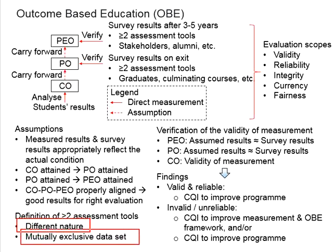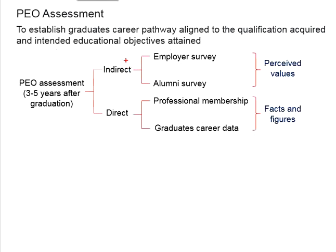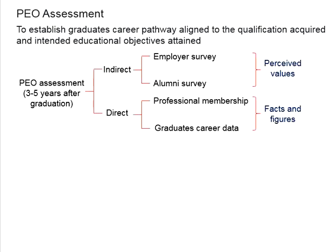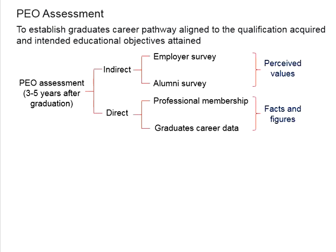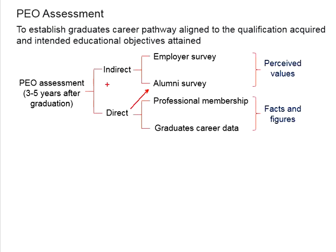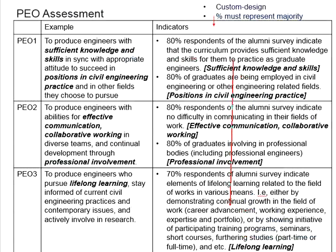If possible, the data sets should be mutually exclusive. For assessing an indicator, consider any two assessments that can be used. If you use the employer survey to cross-check with the alumni survey, the data sets are mutually exclusive, which shall minimize bias. Alternatively, you can use alumni survey measurements against certain indicative data to verify the reliability of the survey. Selecting good strategy here will be very much dependent on your wisdom in choosing enough assessment for good results.